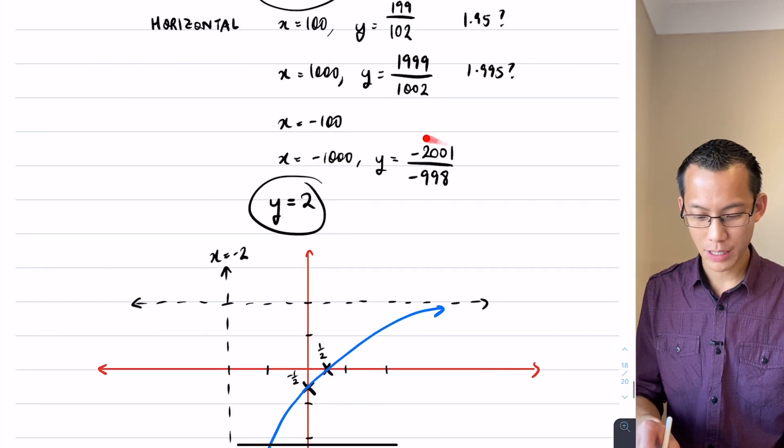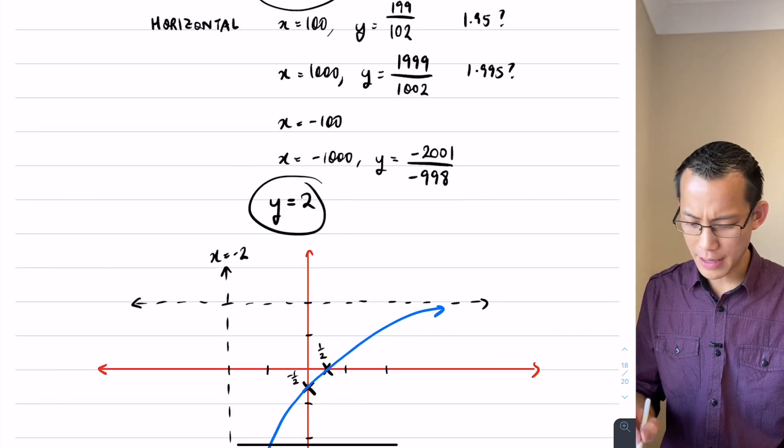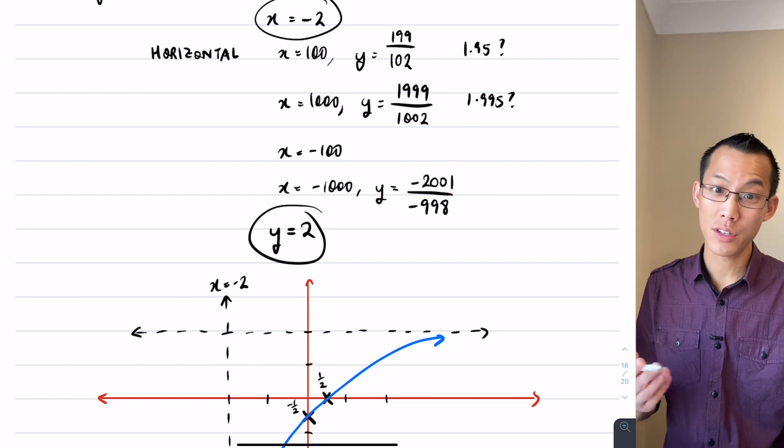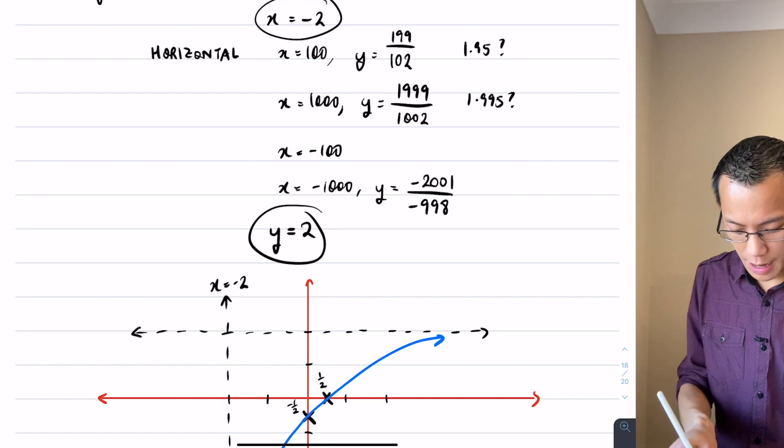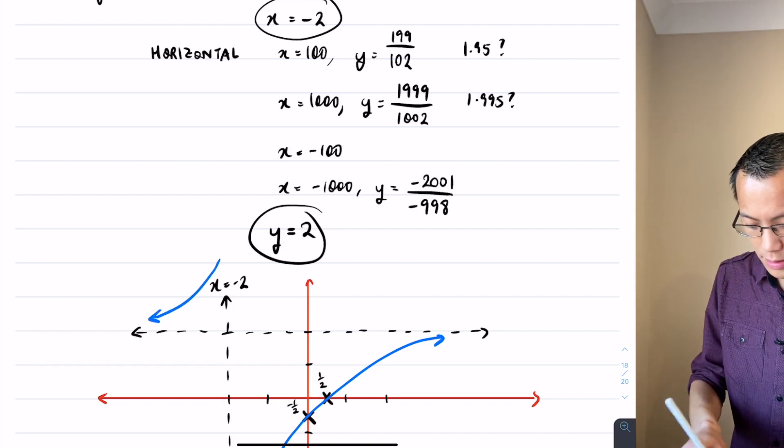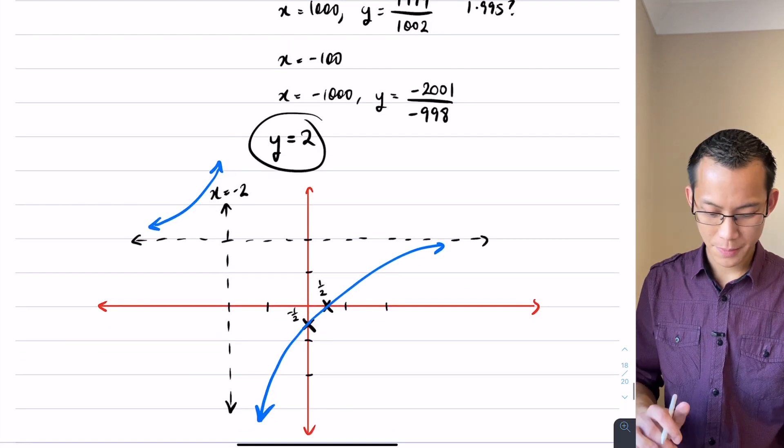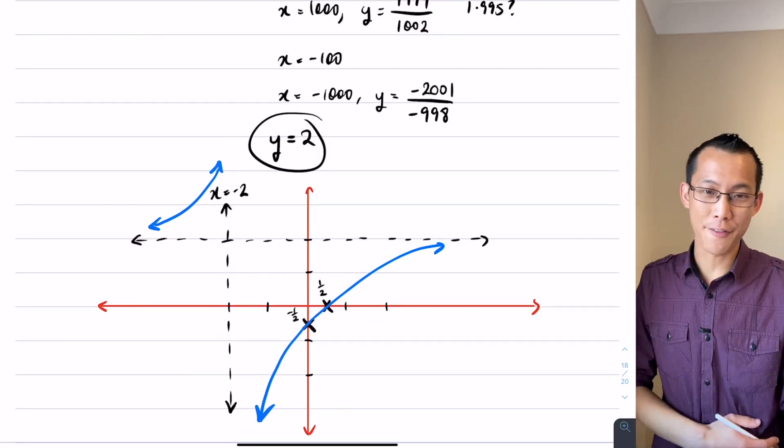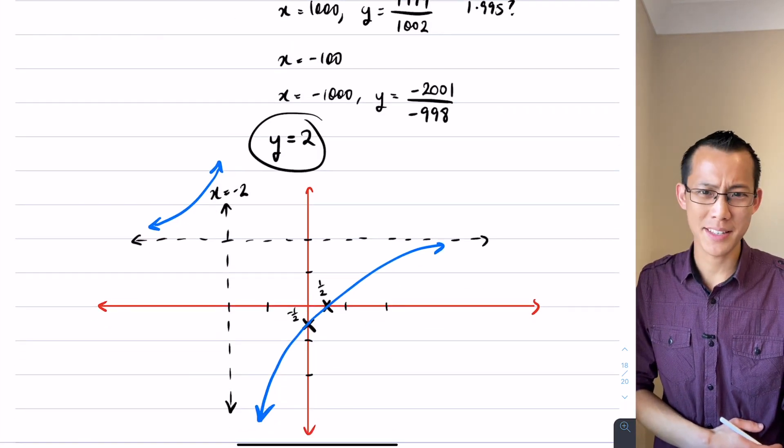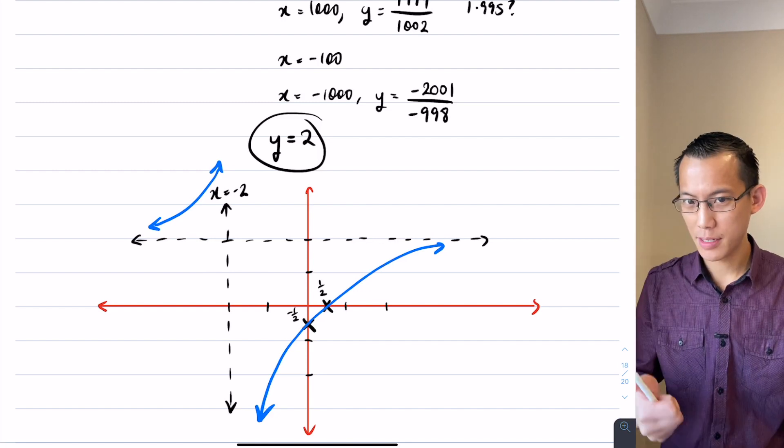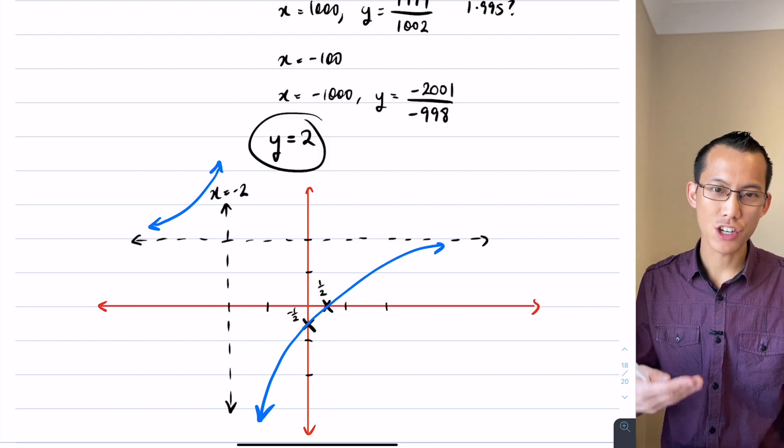because like we saw here, I had this value here of 2.005 from memory, so it's just above. Okay, so therefore I'm getting a shape a bit like this on the left and right over there. Okay, so this is my graph of my rational function. It's a bit weird and messy, but that's it. You can see how I put together my intercepts, my asymptotes, and made a shape out of that.